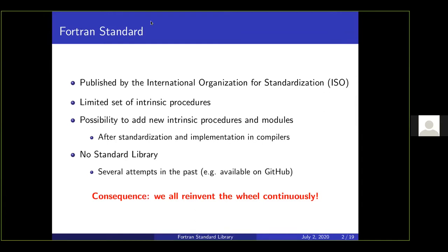The Fortran standard is published by the International Organization for Standardization and contains a limited set of intrinsic procedures. It's possible to add new procedures and modules, but it can take time because they need to be standardized and implemented in compilers — some compilers don't fully support Fortran 2003 yet. There is also no standard library, and on GitHub you can find two, three, or five attempts to create one, so we keep reinventing the wheel, which is something we'd like to avoid.